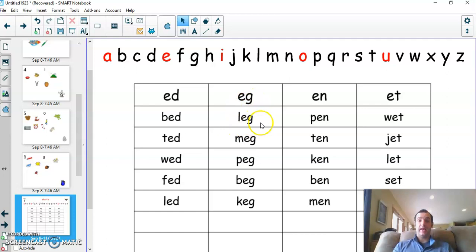Here's the e-g ending. Leg, meg, peg, beg, keg. Here's the e-n. Pen, ten, ken, ben, and men.